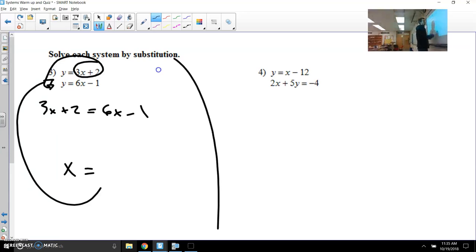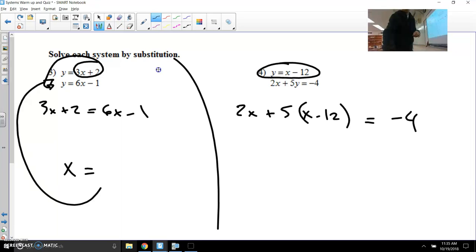Substitution, when one's in standard form and the other one's in y equals mx plus b form, takes a little more work. 2x plus 5y equals negative 4, but we're not going to use y. We're going to use what y equals. We're going to plug in x minus 12. Then distribute, solve for x. And just like in the first one here, we're going to plug that back in and calculate what y is.